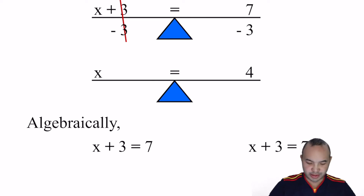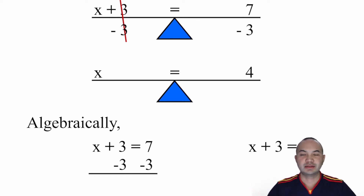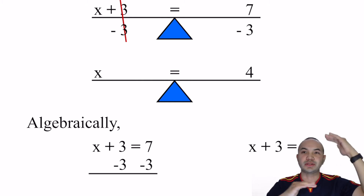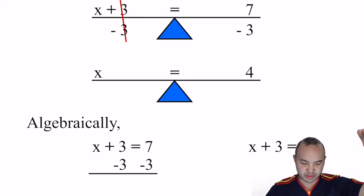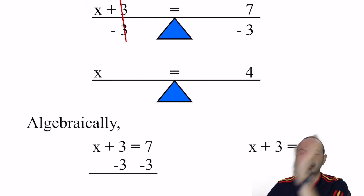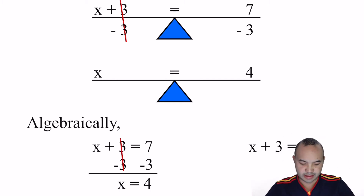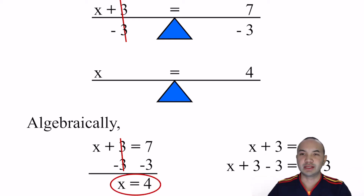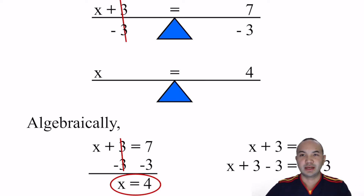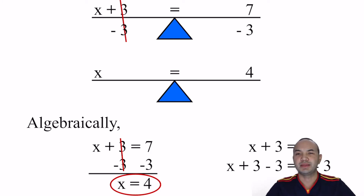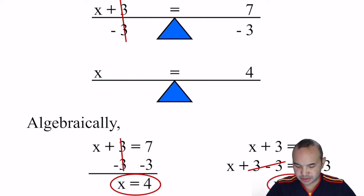If I'm doing this algebraically, I'd be subtracting 3 from both sides. When you show your work, do it vertically — show subtracting 3 on the left side and 3 on the right side, keeping the equal sign straight up and down. Then you're left with X equals 4. You could also rewrite everything as X plus 3 minus 3 equals 7 minus 3, but the vertical method makes more sense to most students.